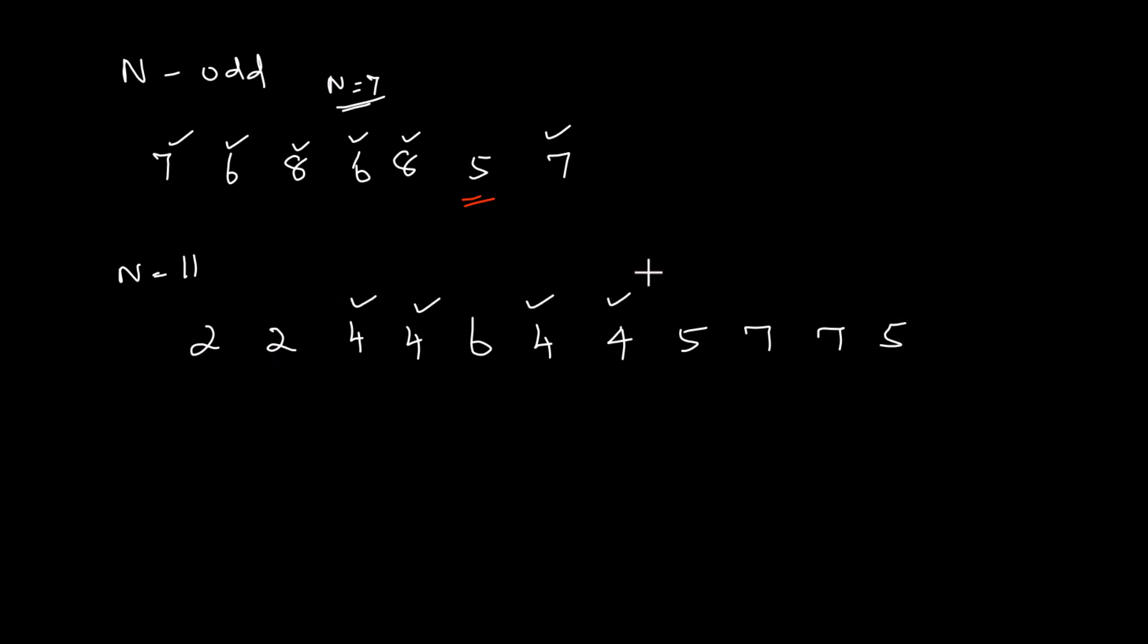4 is occurring even number of times and then 2 is also occurring even number of times. 7 is also occurring even number of times. 5 is also occurring even number of times. Only 6 is not occurring even number of times. It is just occurring once. 6 must be printed as the output. How are we going to do that easily?